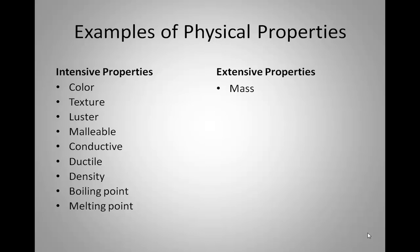Extensive properties change with the amount of substance that you have. Examples include mass, volume (how much space something takes up), and length. If you've got a spool of thread, the more of it you've got, the longer that spool is going to be. The area that something takes up is going to change with how much you have, and the thickness of your substance may also change depending on how you're manipulating your amount.